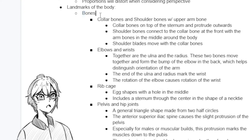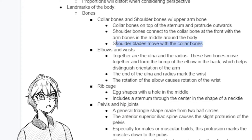Starting with the collar bones and shoulder bones with the upper arm bone — everything around the neck at the upper part of the torso. The collar bones lay on top of the sternum and protrude outwards. They make a really good point to draw from after you draw the neck to draw the rest of the shoulder. Most people in speed paints draw from the collar bones and then out to the shoulders. The shoulder bones connect to the collar bone at the front, with the arm bones in the middle, and they wrap around the body, so the collar bone, arm bone, and shoulder blade all move together as a unit.